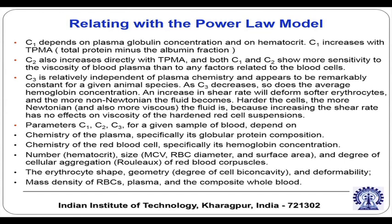C1 depends on plasma globulin concentration and non-hematocrit factors. These are not universal constants — they will vary from one individual to another and from one diseased condition to another. C1 increases with the total plasma minus albumin fraction. Albumin is a protein in the blood plasma, so if there is a change in albumin concentration, C1 will change.